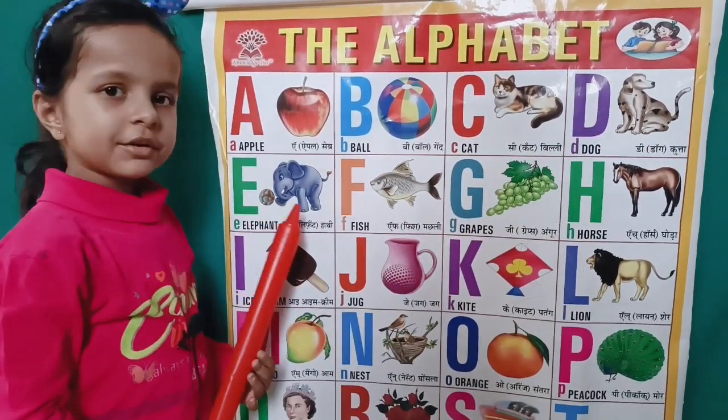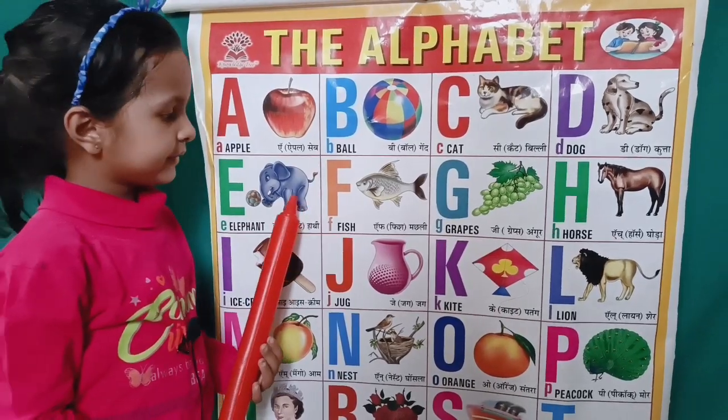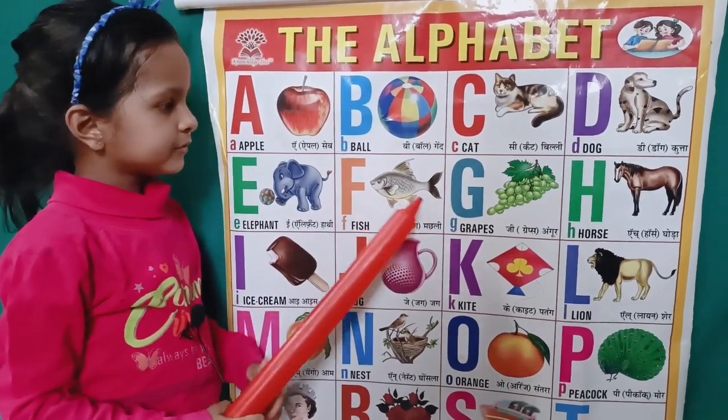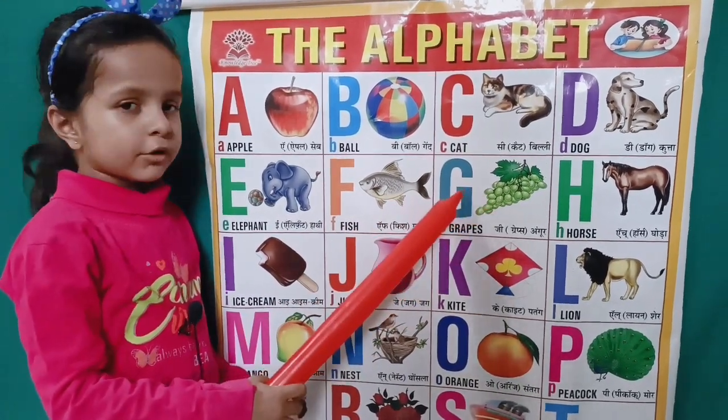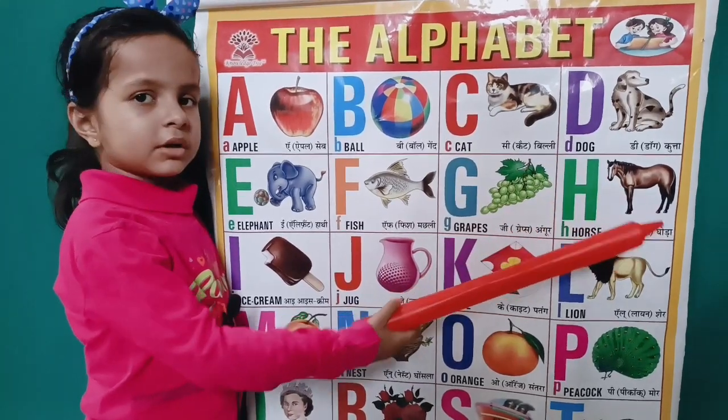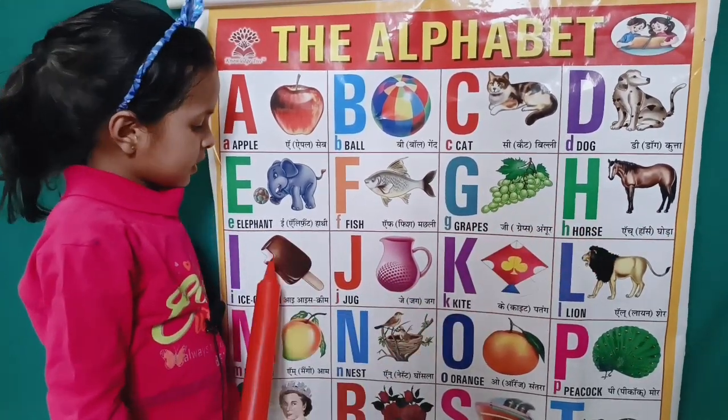E for elephant, F for fish, G for crabs, H for horse.